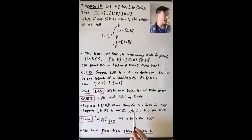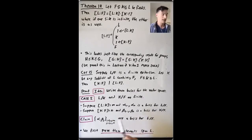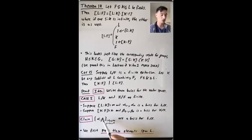We're going to prove this statement by actually writing down a basis of size n times m for L as a vector space over F. The only reasonable set of n times m elements we have access to is the set of all products αᵢ times βⱼ. This makes sense because K is contained in L, so the β₁ through βₙ are elements of K but also elements of L, meaning each αᵢ times βⱼ is in L. There are m choices for αᵢ and n choices for βⱼ, giving us n times m elements.